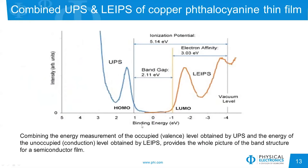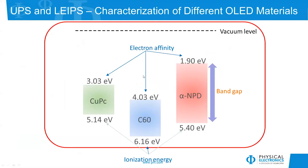By combining UPS with LIPS, we can get a complete picture of the molecular orbital structure of materials. This example was done on a copper thiocyanate thin film. The UPS provides the ionization potential while the LIPS provides the electron affinity; taking the difference between those two values we can easily determine the band gap in the material. Here's another example showing three different materials commonly used for OLEDs where the electron affinity and ionization energy were determined by the combination of UPS and LIPS, and then the band gap is simply calculated from the difference.